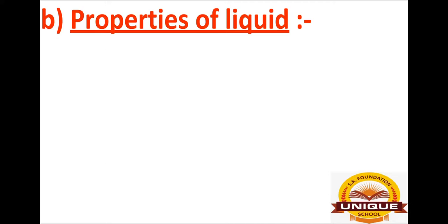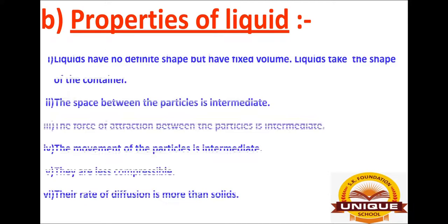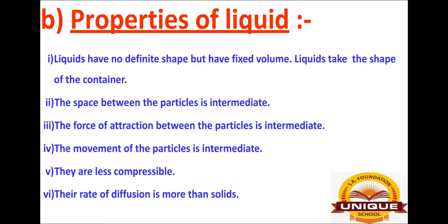Now we will talk about the properties of liquid. Liquids have no defined shape but they do have a defined volume. The shape of a liquid is not fixed — when you put it in a container, it takes the shape of that container. But the volume is fixed; if you have 10 ml, it will remain 10 ml. The space between the particles in a liquid is intermediate.